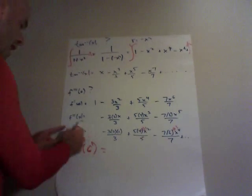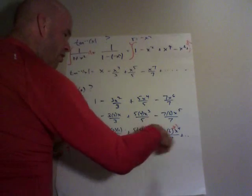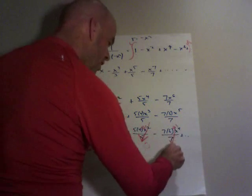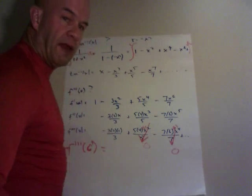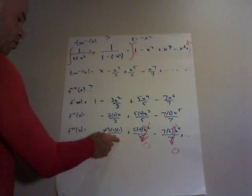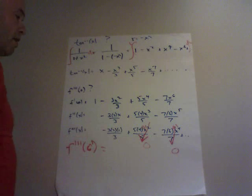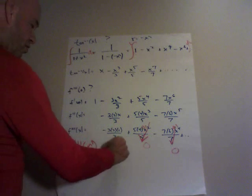But now I want to know what f triple prime of 0 is. You see, I'm going to evaluate these at 0. All these terms are going to have x's. They're all going to 0. The only term that is going to survive is this one, which is going to be negative 3 times 2 times 1 over 3, which is negative 2.